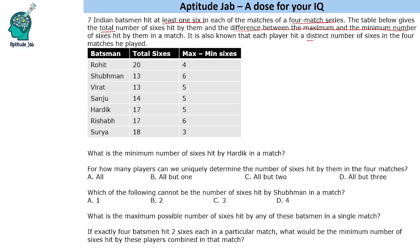Now, how to find the minimum and maximum? One way is by hit and trial, but here's a better method. Since there are four matches, if you divide the total by four you get the average number. For example, if we divide twenty by four, the average number is five. The difference between maximum and minimum should be four.